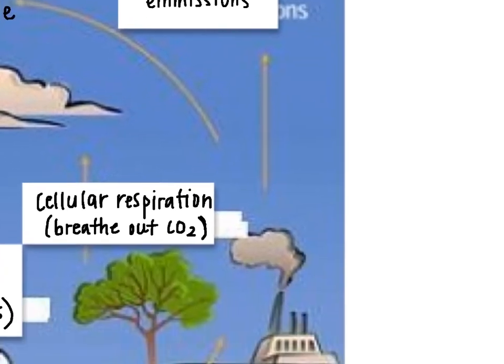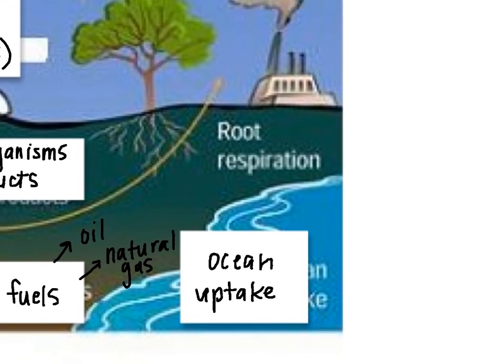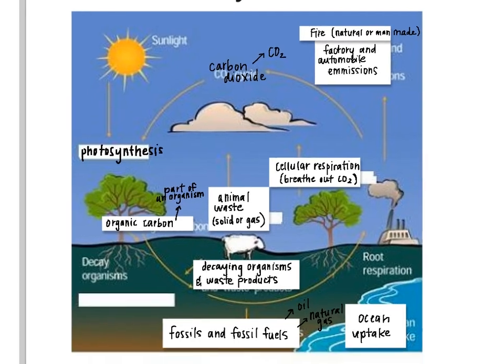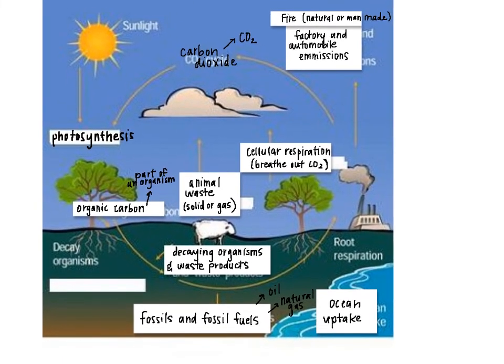There is also a type of carbon that can be taken up by the ocean, very similar to the nitrogen cycle where nitrate becomes part of the water. So we have some carbon that's existing in the ocean, and it's just kind of in storage there. The carbon cycle doesn't have a beginning or end — it just keeps going around and around, changing form.